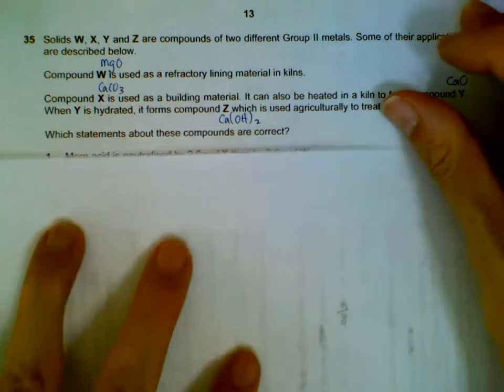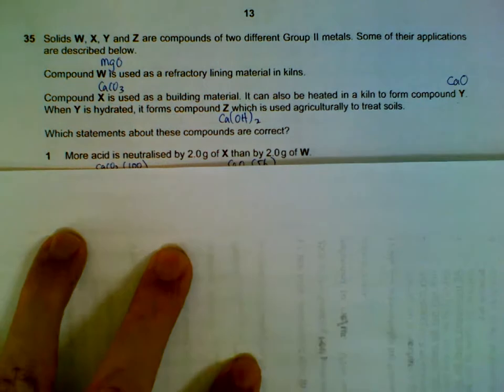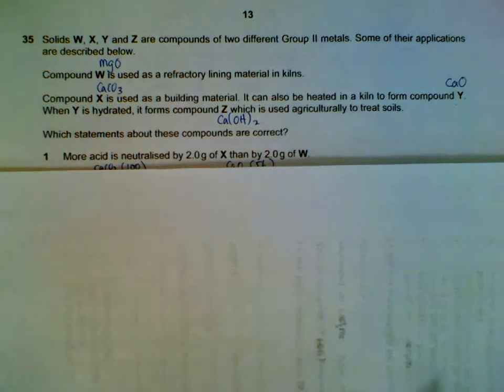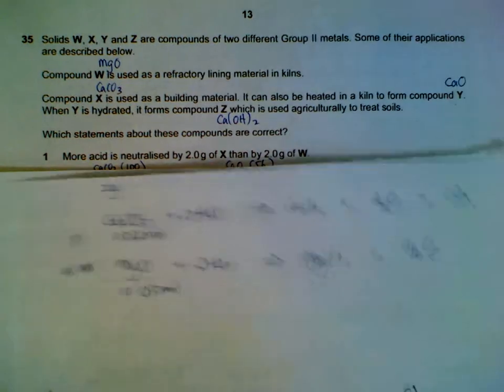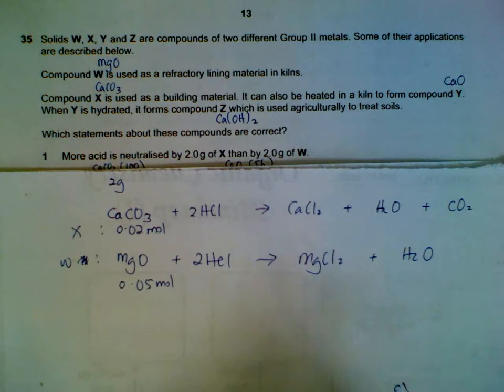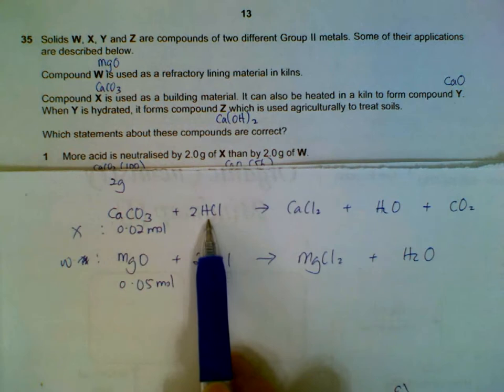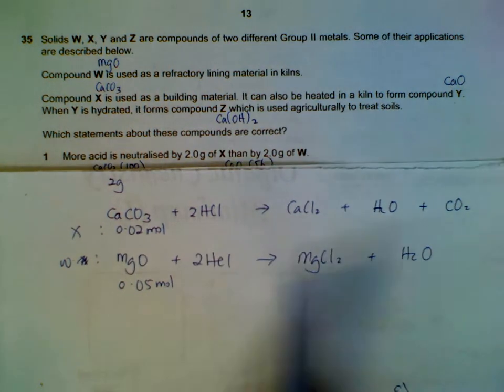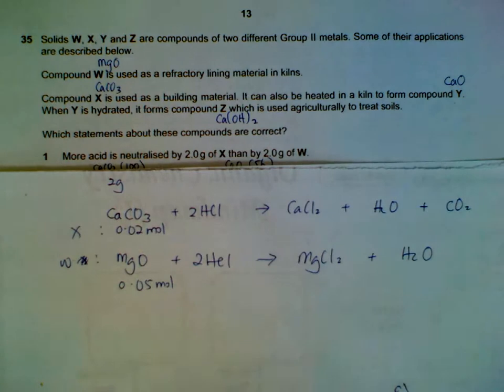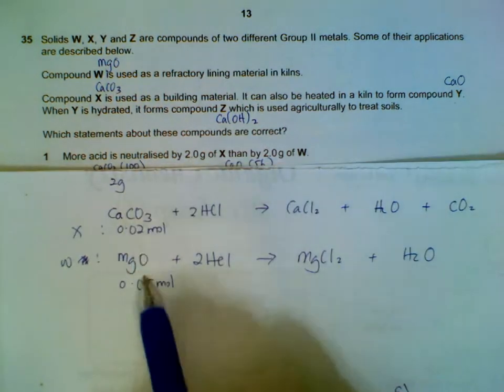So what statements are correct? Statement one: more acid is neutralized by two grams of X versus two grams of W. You can use a balanced equation to compare this statement. So we have calcium carbonate using hydrochloric acid as example. We have our equations for both of them.